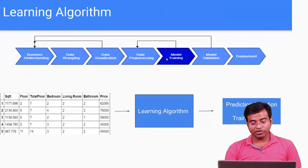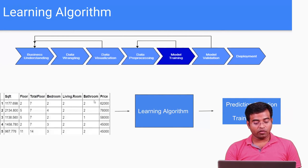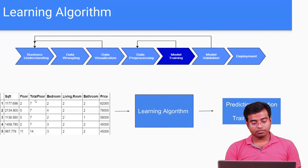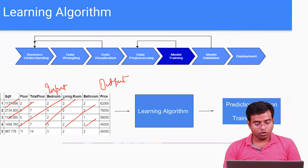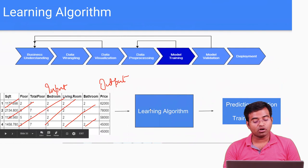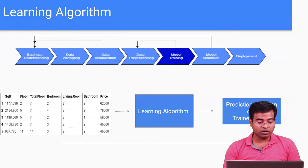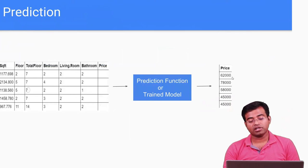Then comes the learning algorithm — the model training part. You pass the data, for example a housing dataset with square footage, number of floors, and totals, along with the price. You can think of the features as input and the price as output. You pass this data to the learning algorithm and what it returns is a trained model or prediction function. Once the model is trained using historical data, you pass new data to it and it will predict the price for that new data.